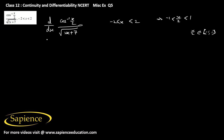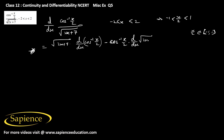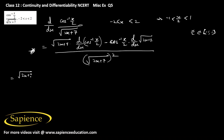Before differentiating, we apply the quotient rule. That will be equal to: square root of (2x+7) into d/dx of cos inverse (x/2), minus cos inverse (x/2) into d/dx of square root of (2x+7), whole divided by (2x+7). The derivative of cos inverse (x/2) is minus 1 over square root of (1 minus x²/4), multiplied by 1/2.